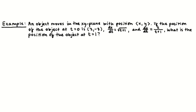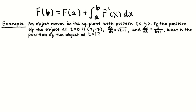Before I tell you anything you don't already know, I want to call back to something we used extensively in the first semester of this class: f(b) equals f(a) plus the integral from a to b of f prime of x dx — the restatement of the fundamental theorem of calculus. We're going to use this to recover positions given a velocity equation and an initial position.